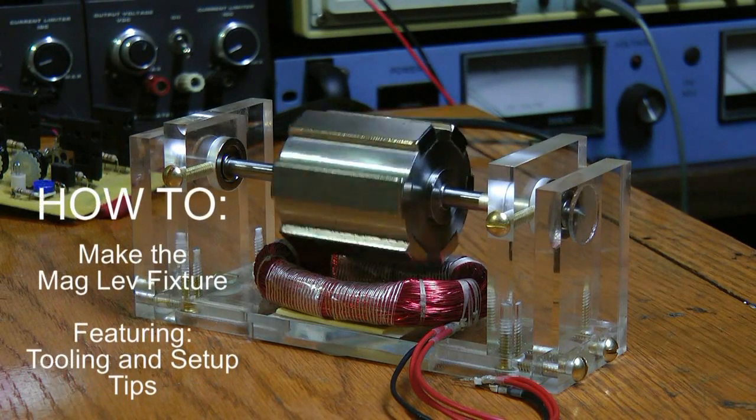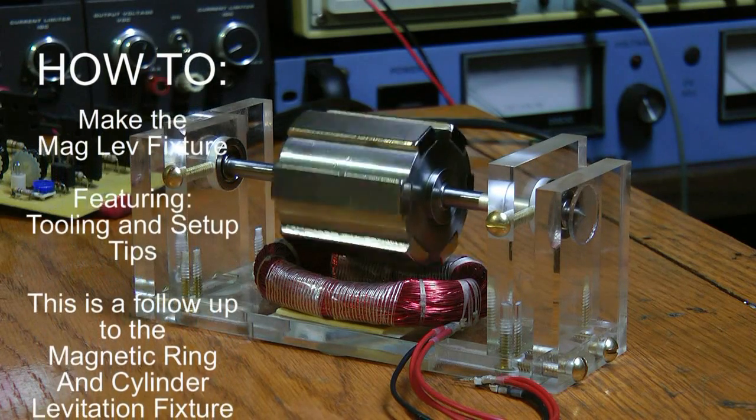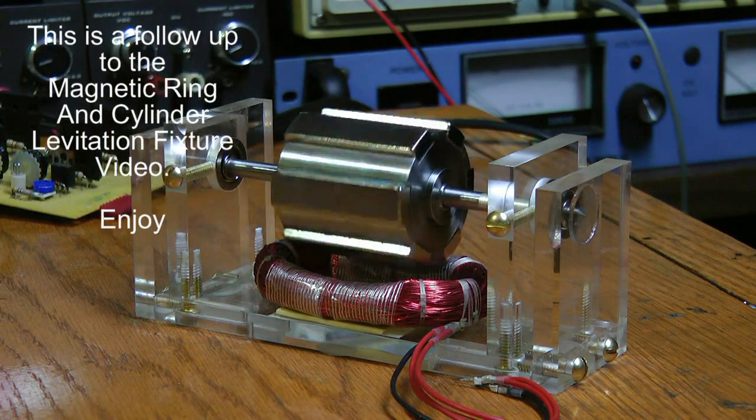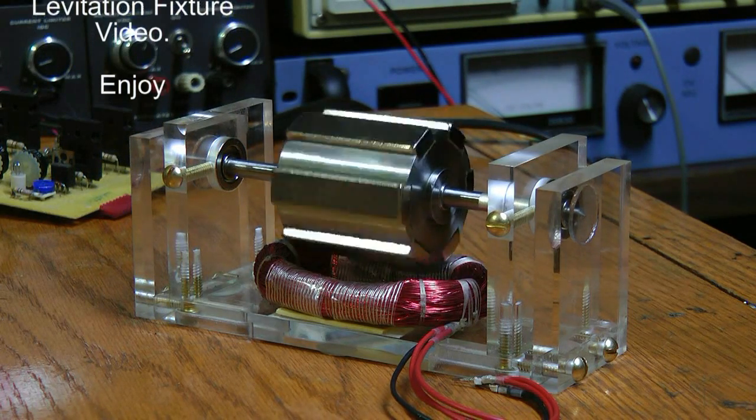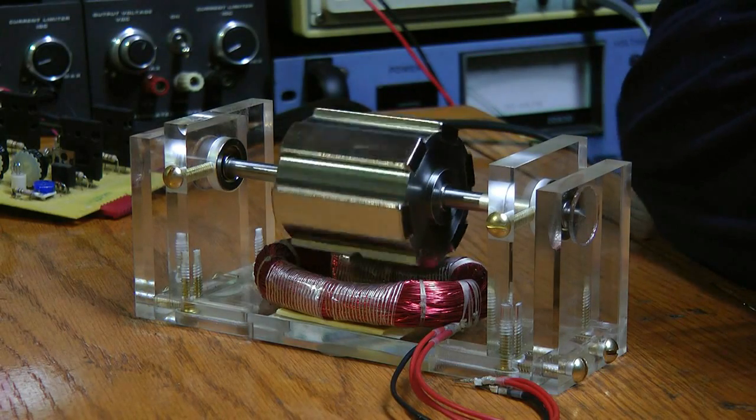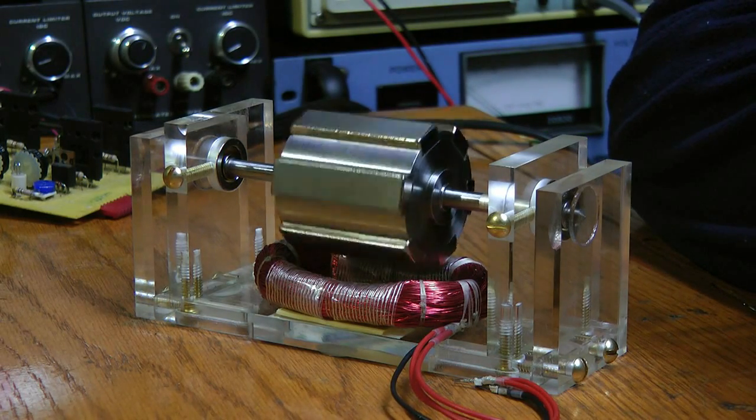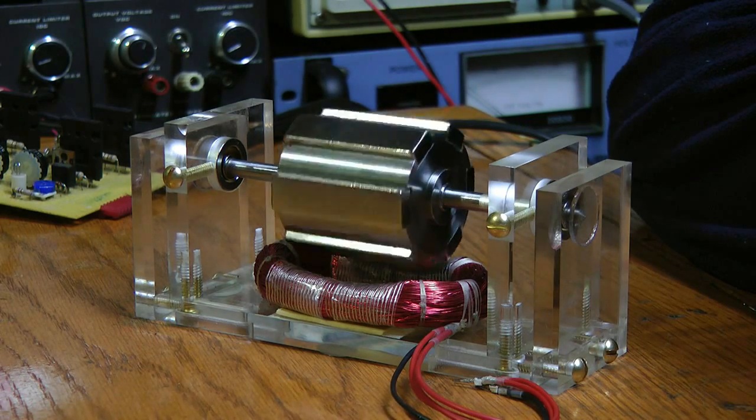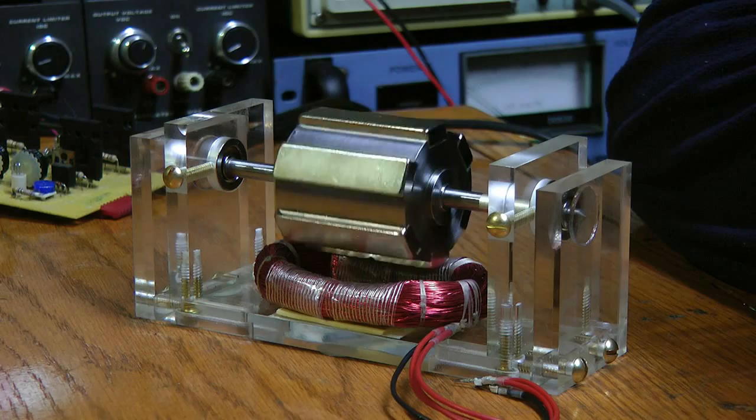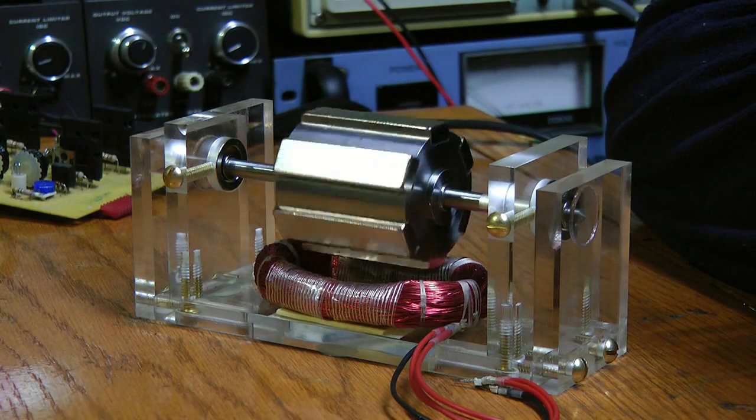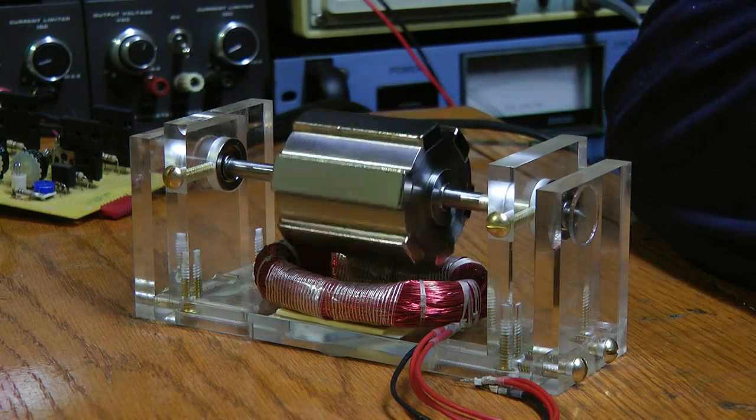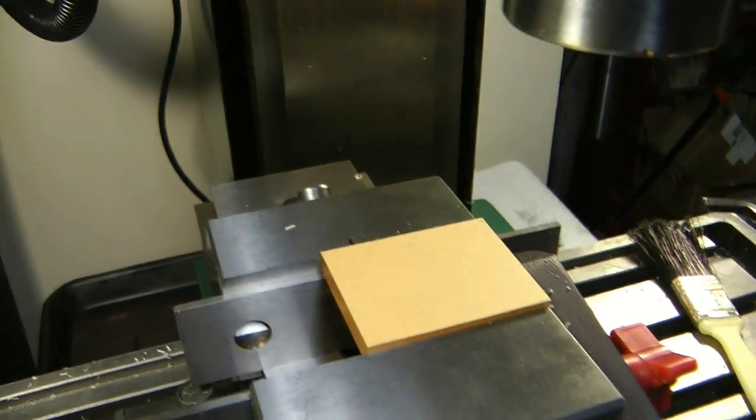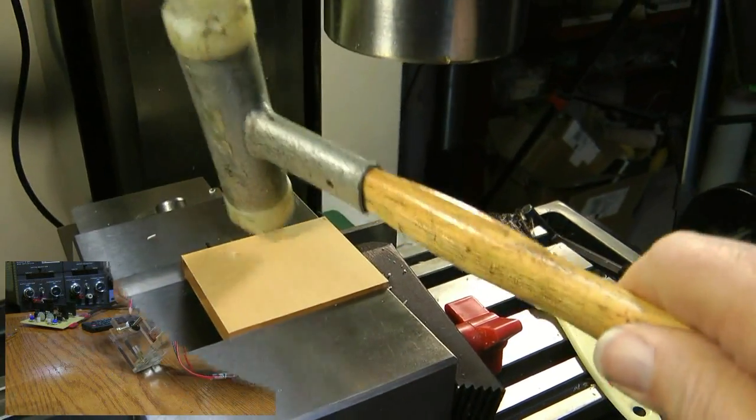Hello, at the end of the maglev base video I promised that I'd make another video showing how I put this fixture together, along with some of the machining steps and maybe a few tricks here and there on my setup. So that's what we're going to look at today. As you can see, I managed to lift the two-pound window motor rotor and it has about a 20-minute spin down, so I'm pretty happy with this. But anyhow, let's get on with the machining steps.